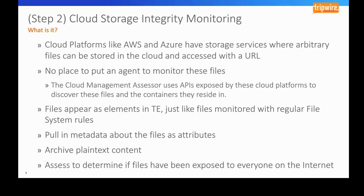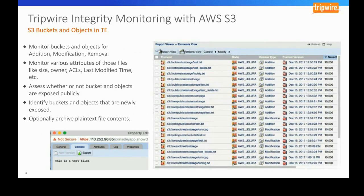Moving to step three, we're transitioning to looking at what this actually looks like within Tripwire Enterprise. You can see how these buckets — in this case AWS S3 buckets — appear within Tripwire Enterprise. We're showing each object within TE, allowing us to monitor buckets and objects for addition, modification, and removal of files within those buckets.